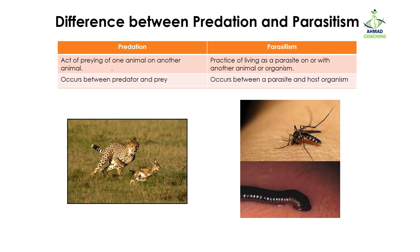The second difference is that predation occurs between a predator and a prey. The predator is the animal who attacks, while the prey is the animal who is eaten. In parasitism, it occurs between a parasite and a host organism. The parasite is the organism which lives in or with another organism.